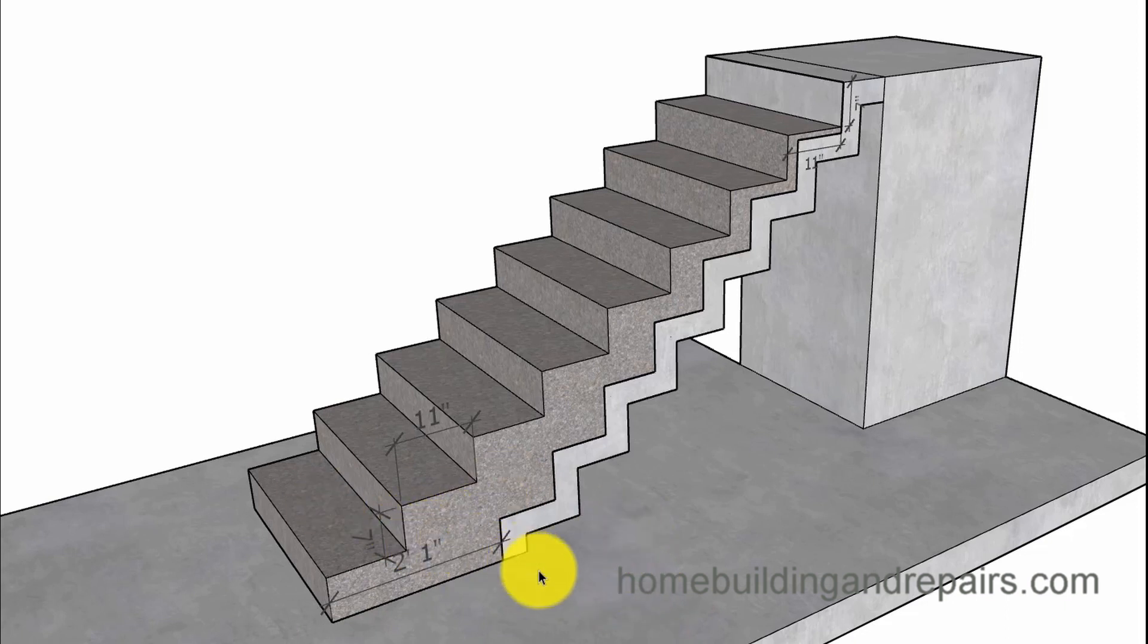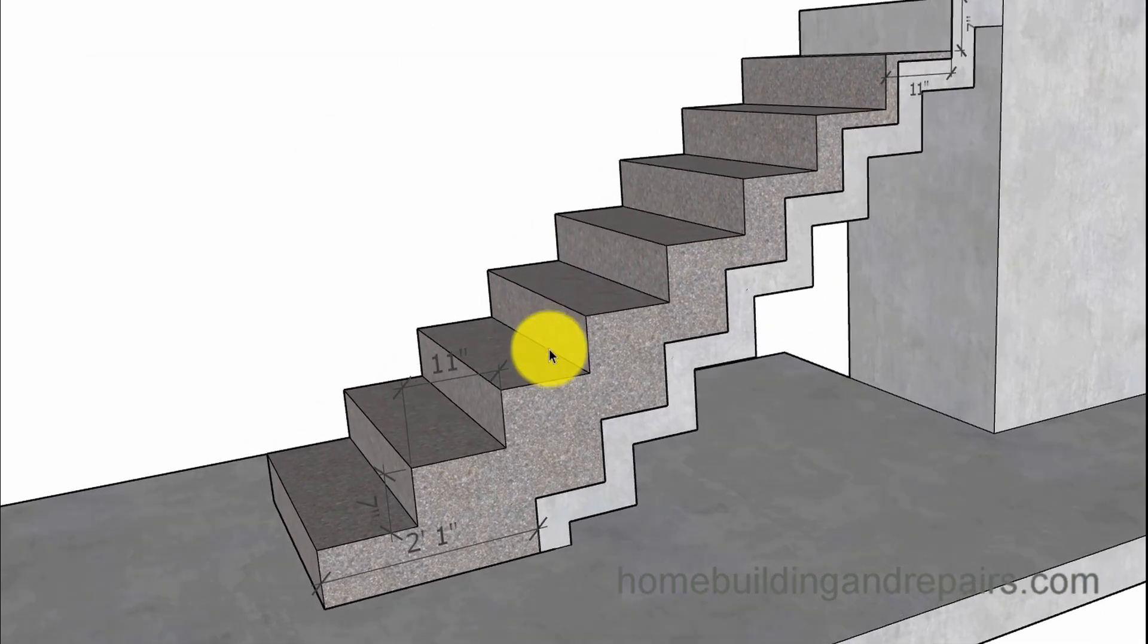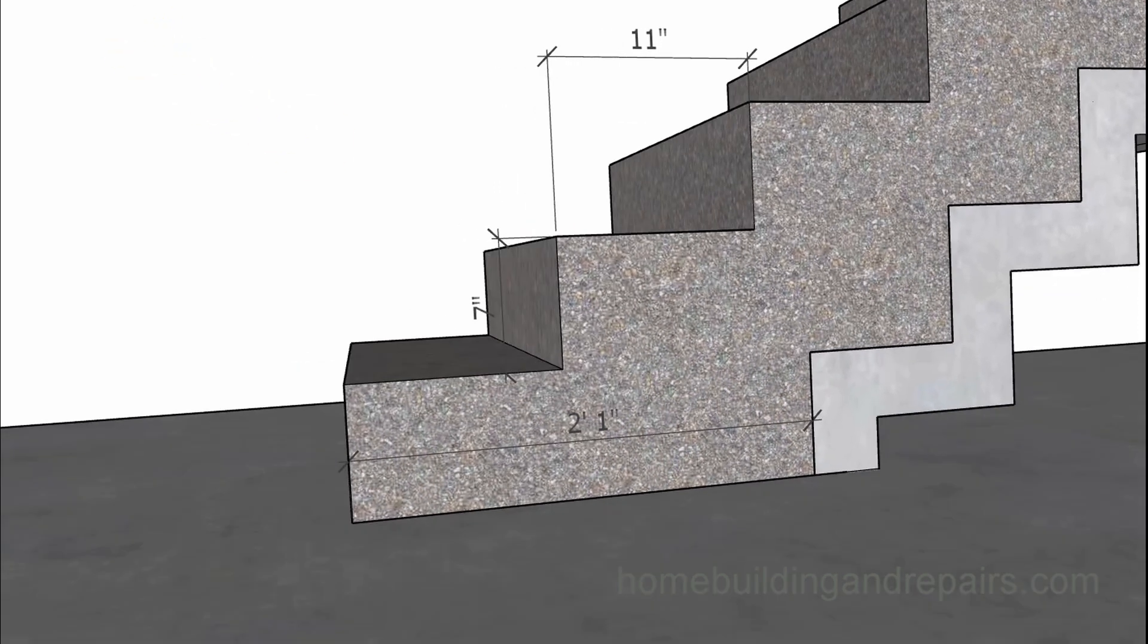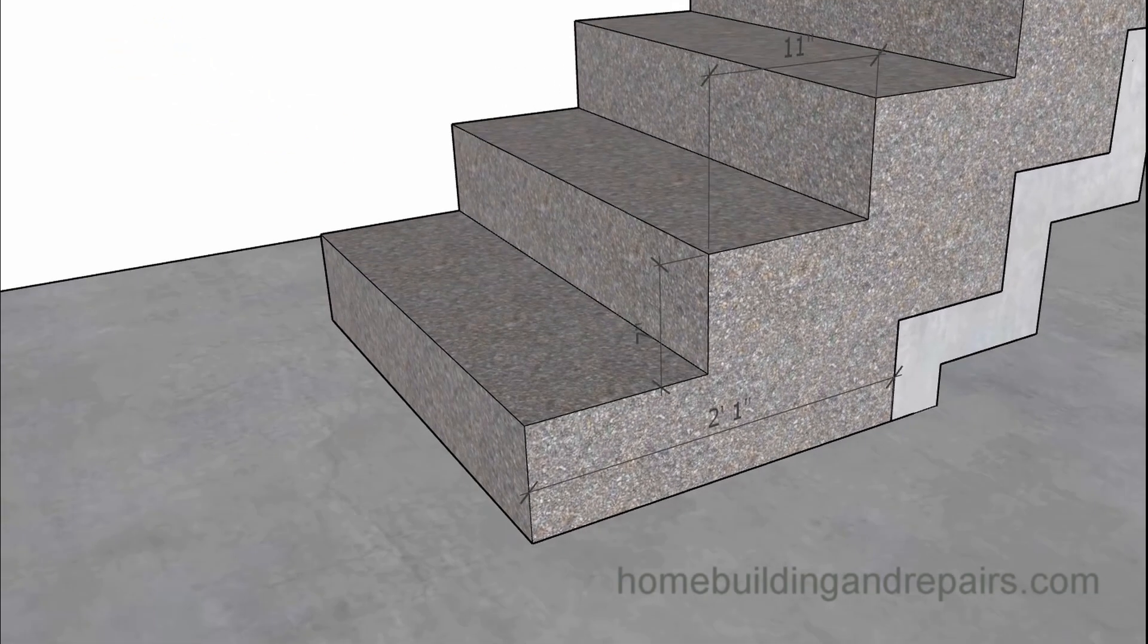You'd simply reform the stairway and pour another stairway on top of the existing one, if that makes sense. This one here looks like we're adding about two feet, a little over two feet, to the stairway, and the top should work out something like this.